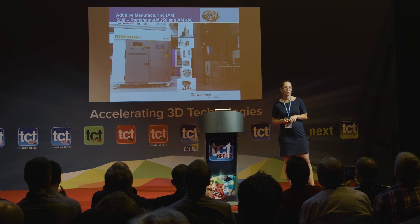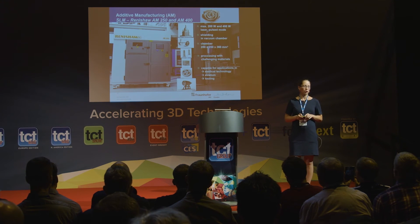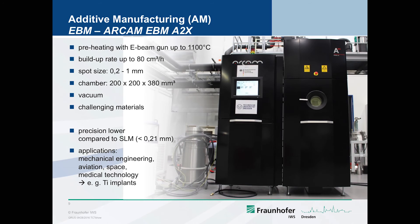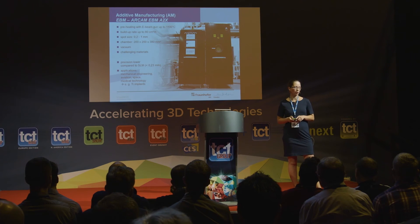At Fraunhofer IWS we have a Renishaw AM 250 and AM 400, using a 200-watt or 400-watt laser with a build chamber of 250 × 250 × 360 mm. We process challenging materials for medical, aviation, and tooling applications. We also have the Arcam EBM A2X electron beam melting machine, where you can preheat the powder bed up to 1,100°C, enabling processing of crack-sensitive materials, and the vacuum environment allows processing of reactive materials that depend on purity.